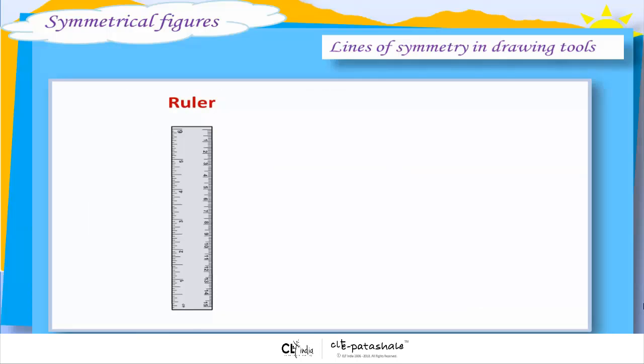Ruler. The number of lines of symmetry is 2.